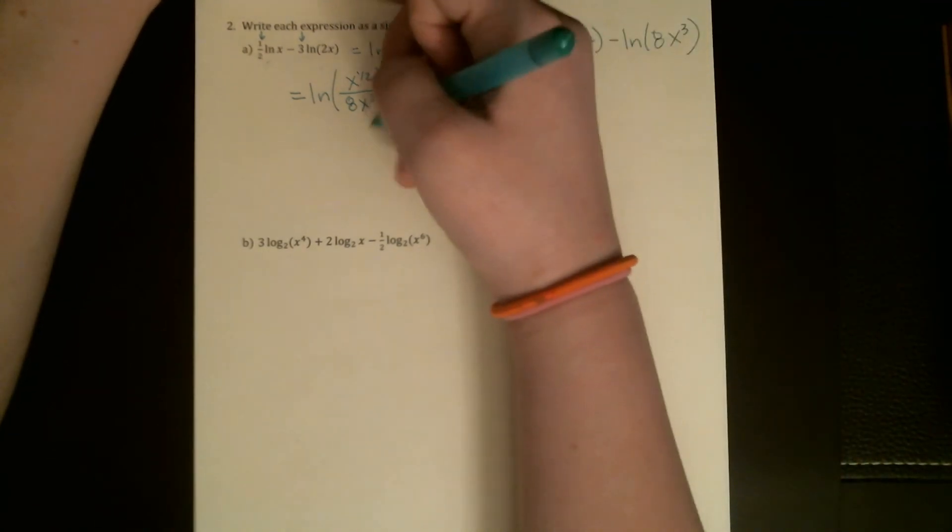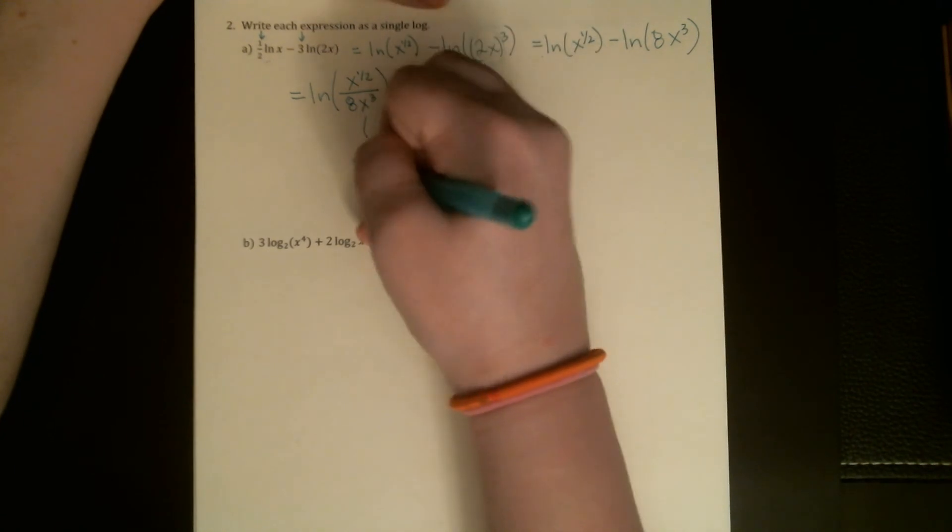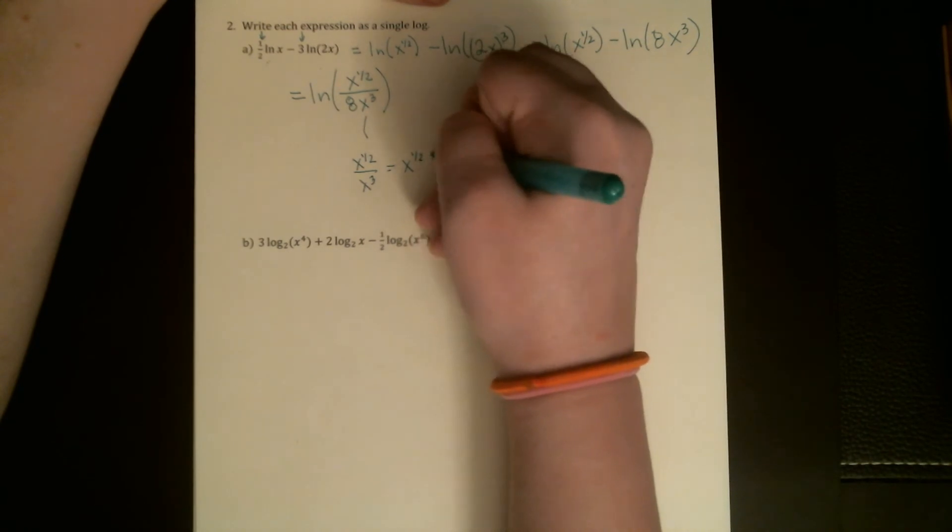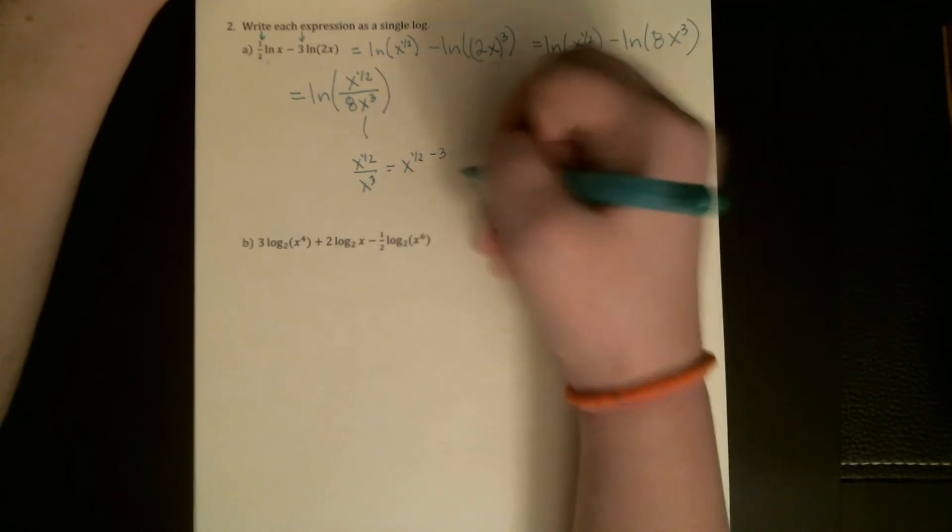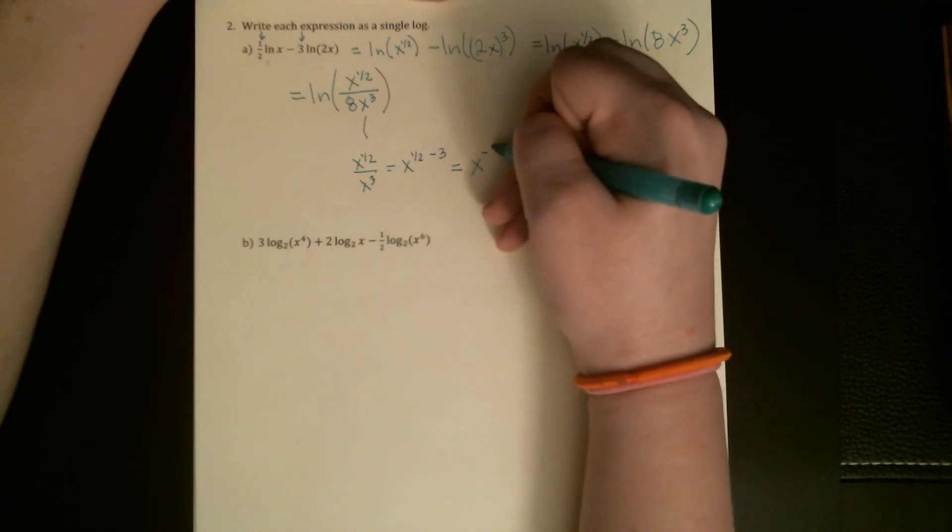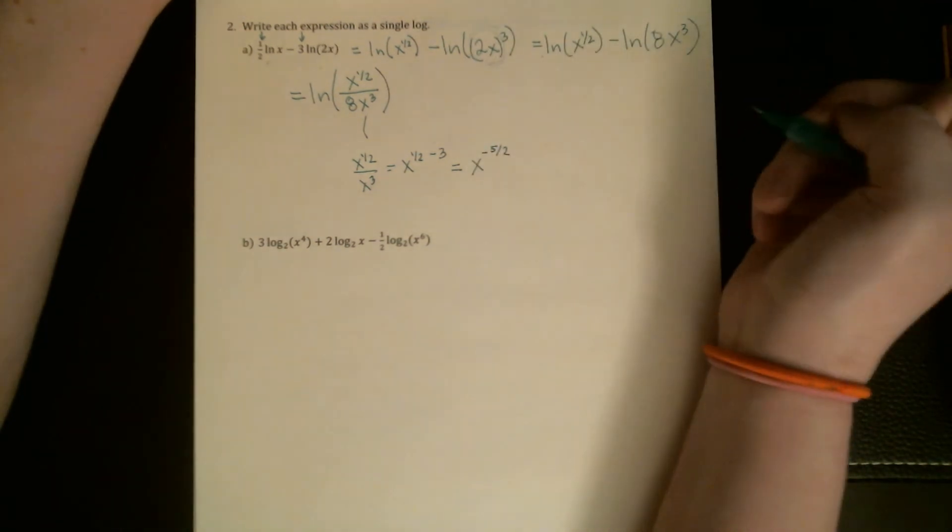So if we think about a little side note here: x to the one-half over x cubed, the exponent rule would be subtract exponents. So we're going to get x to the one-half minus three, which is x to the negative five-halves, x to the negative two and a half.